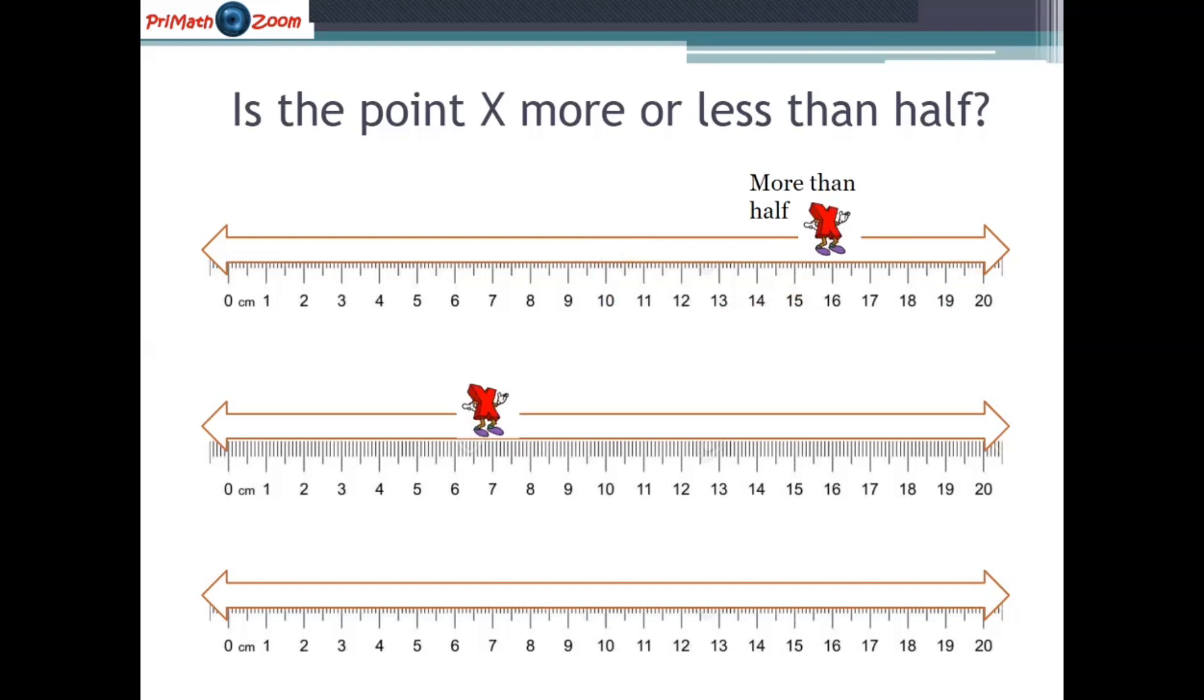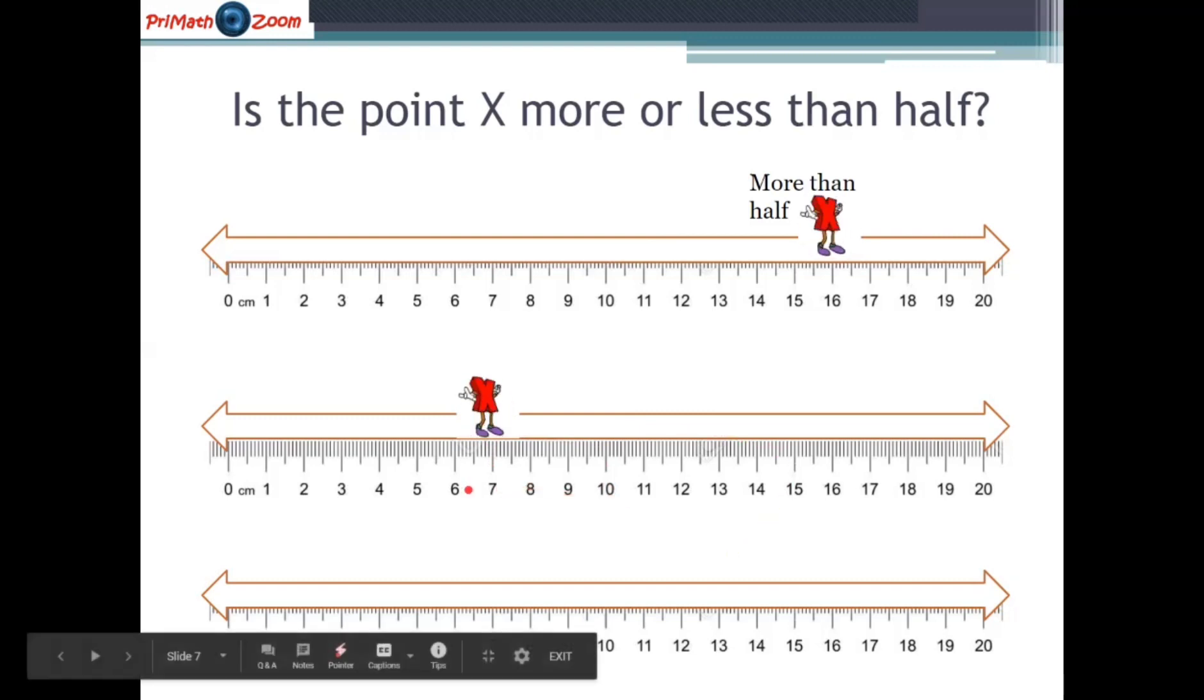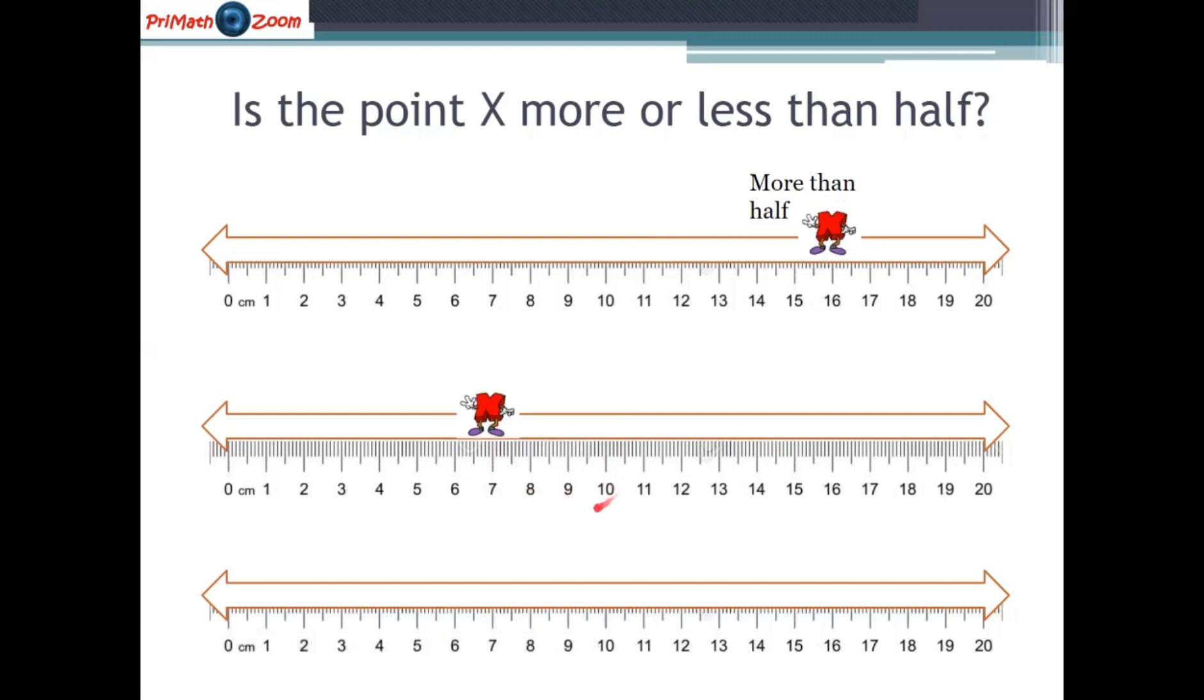Let's think about this other X right here. We know from zero to 20, the half mark is 10 centimeters. So here with the X right here at seven centimeters. Is the X less than the half mark or is the X more than the half mark? Well, we know that seven is less than 10. So yes, this X is less than half.